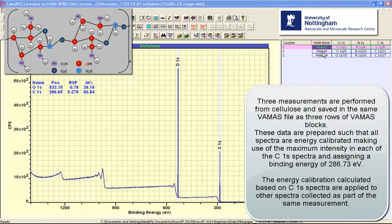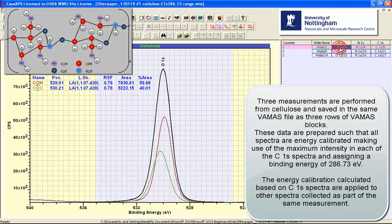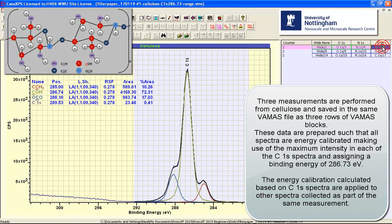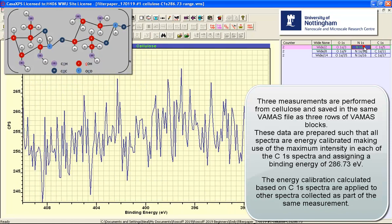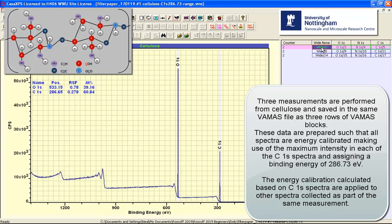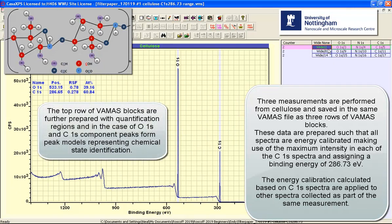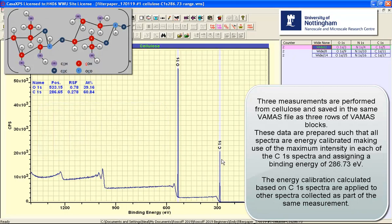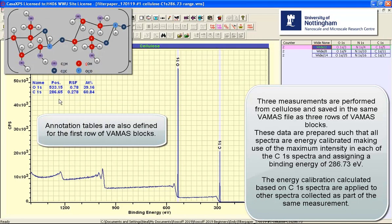This FAMAS file contains three measurements from cellulose and each measurement represents a survey measurement, oxygen and carbon. There is nitrogen but at very low concentration, so the spectra of interest have been prepared for the first row representing one measurement with a pair of regions on the oxygen and carbon, and there is a quantification table.